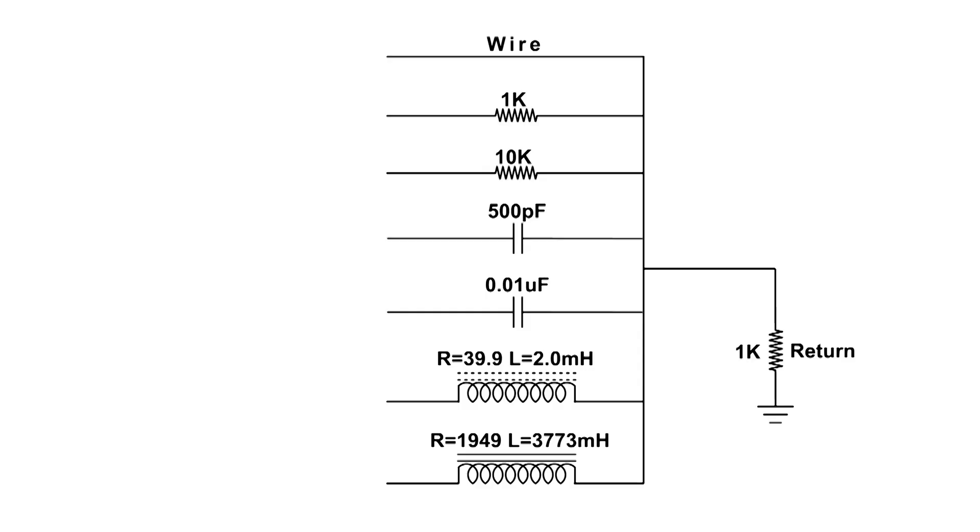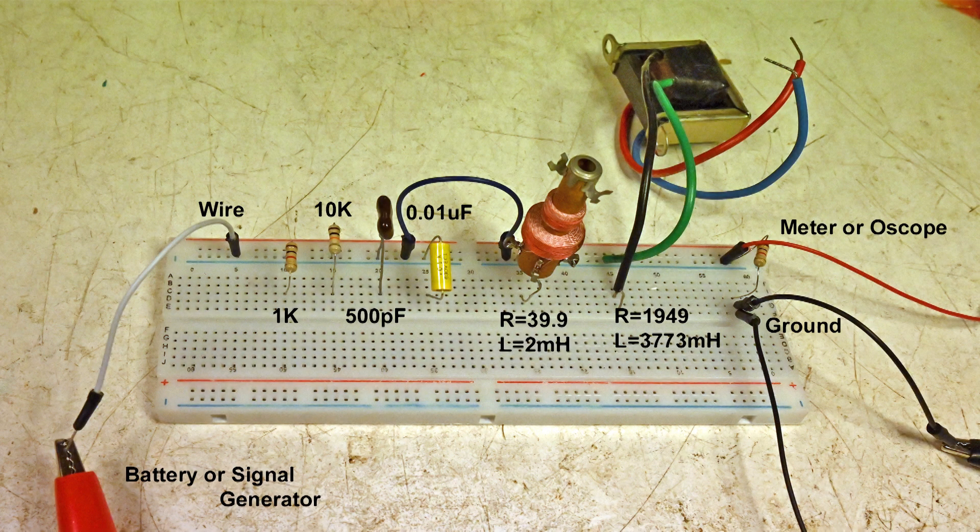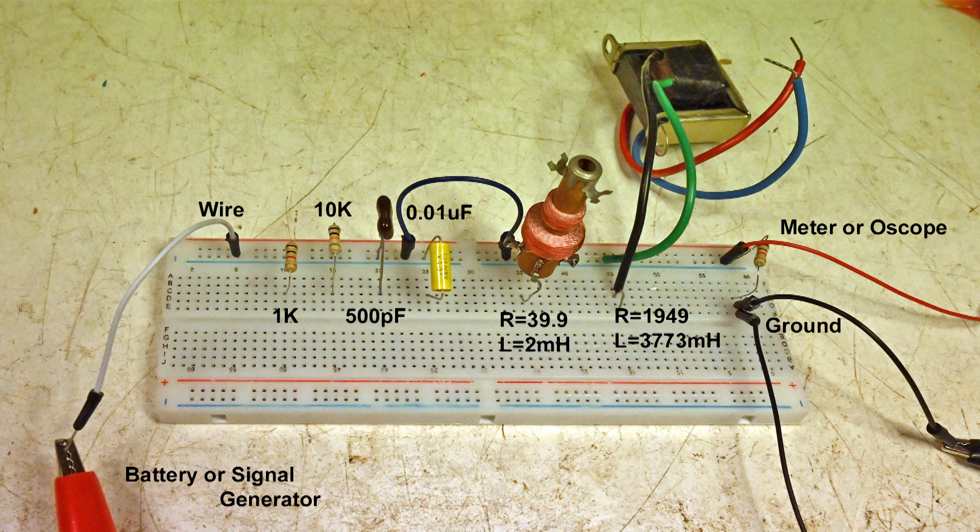This is the wiring diagram, and you can see that it's very simple. We've got a wire at the very top, and then a 1K and a 10K, and a couple of capacitors and a couple of coils.